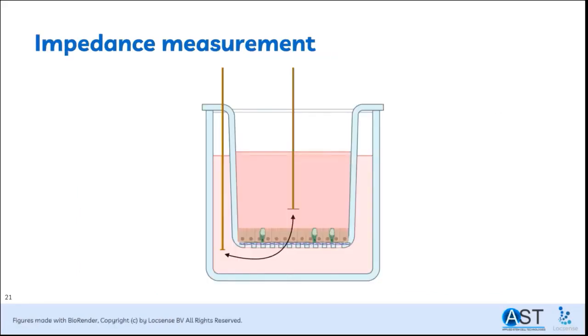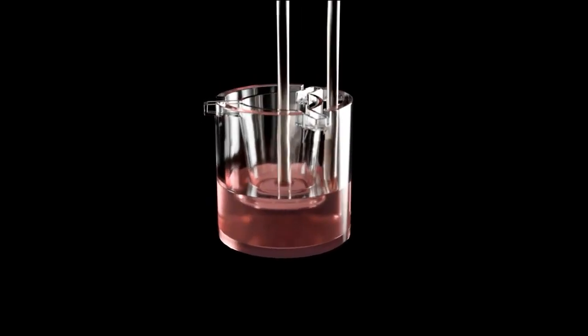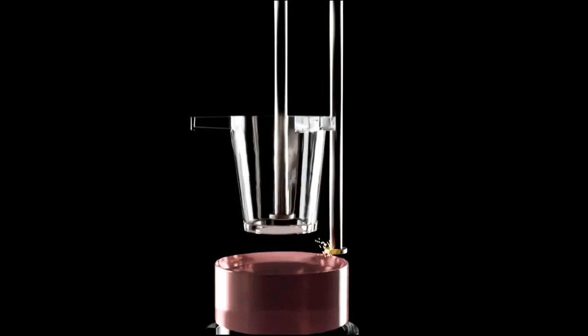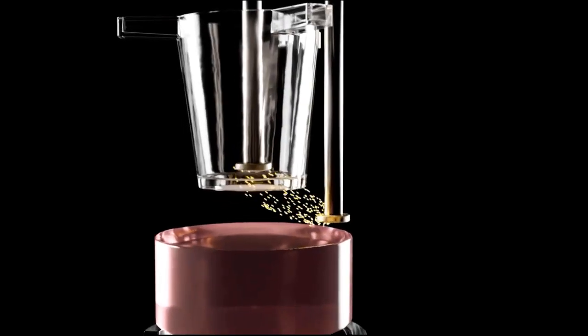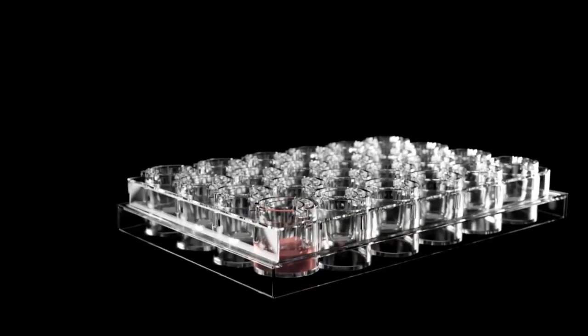Measuring the impedance is performed with a set of two electrodes: one on the apical side of the transwell and one on the basolateral side. Current flows up and down between those two electrodes, and the impedance over the whole path or circuit is measured. In an animation of the measurement, you can see a transwell-containing well, with one electrode positioned inside the transwell and the other outside. Current flows up and down through the cell layer, and the impedance of the current through the cells is measured.